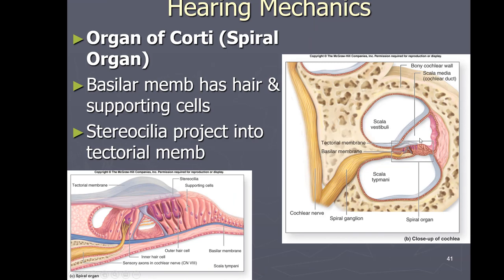Zooming into one of these sections we see the scala vestibuli, scala tympani, scala media, vestibular membrane, and basilar membrane. On the basilar membrane sits the apparatus that allows us to hear: the organ of Corti, sometimes called the spiral organ because it spirals throughout the cochlea. The organ of Corti has little hair cells similar to before — each with a kinocilium and stereocilia — and on top is a gelatinous-like layer called the tectorial membrane.